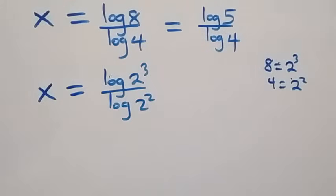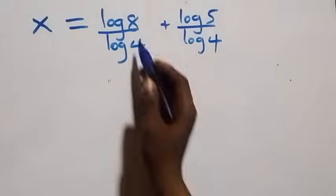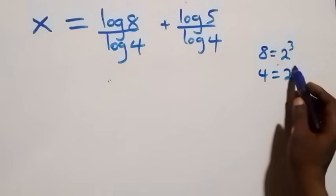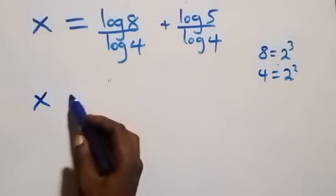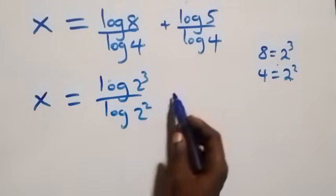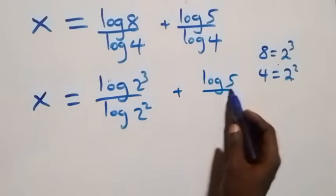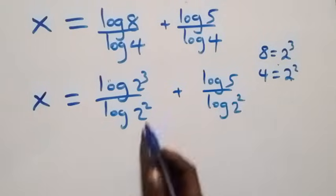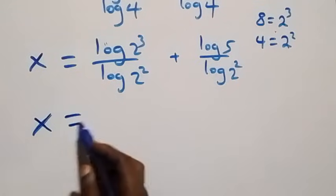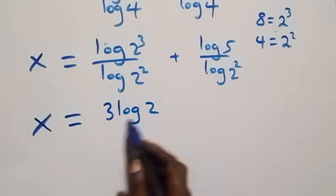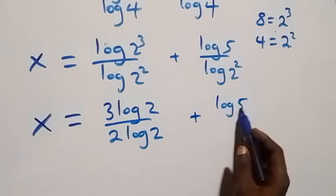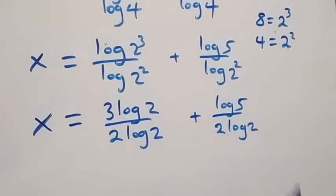We apply the power law of logarithms again: 3 comes down from the numerator and 2 comes down from the denominator. So we have x equals to 3 log 2 over 2 log 2, plus log 5 over 2 log 2.